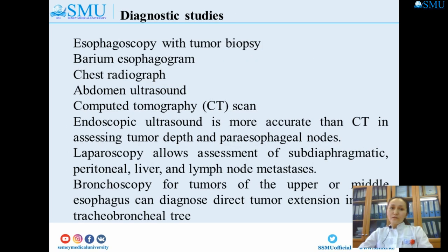Diagnostic studies include esophagoscopy with tumor biopsy, barium esophagogram, chest radiograph, abdominal ultrasound, CT scan. Endoscopic ultrasound is more accurate than CT in assessing tumor depth and paracesophageal nodes. Laparoscopy allows assessment of subdiaphragmatic, peritoneal, liver, and lymph node metastases. Bronchoscopy for tumors of the upper or middle esophagus can diagnose direct tumor extension through the bronchial wall.